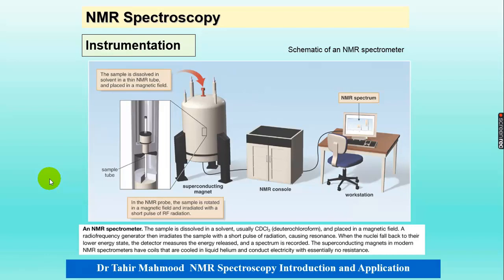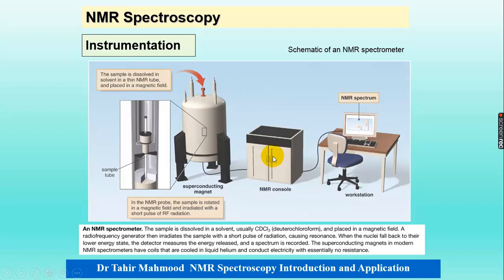This is the diagram of the NMR spectrophotometer. The circular shape shows the superconducting magnet, and the red color indicates the sample placed inside the magnet. The NMR console is used for the operating procedure, and after that we get the NMR spectrum on a workstation or recorder.